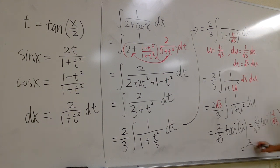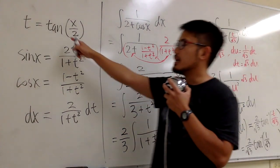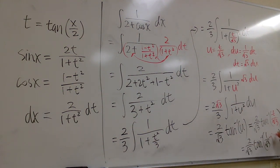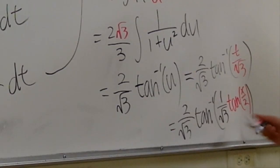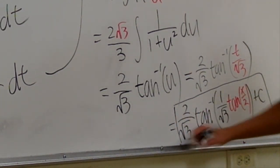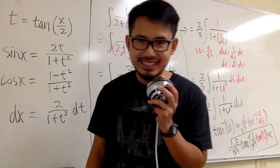And then, finally, we have 2 over square root of 3, inverse tangent. And let me write this down as 1 over square root of 3 first. And for the t, we know this is tangent of x over 2. So, I'll put that down right here. The original tangent of x over 2. And then this right here will be the final answer. So, I will put a plus c, and then we are done. Hope you guys enjoyed this question.